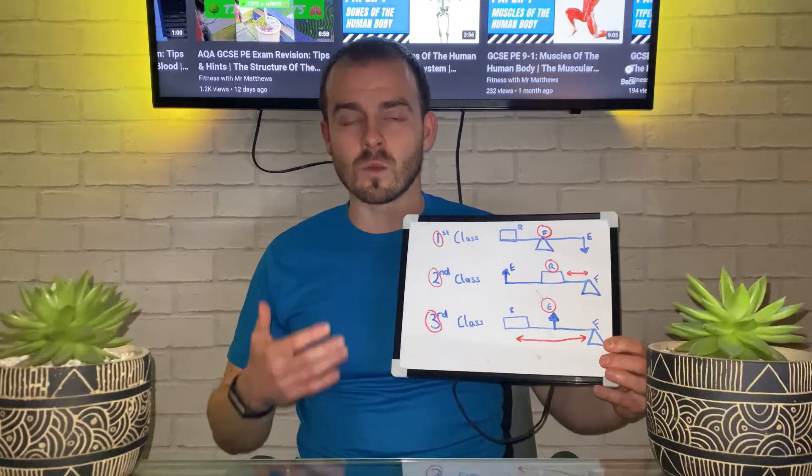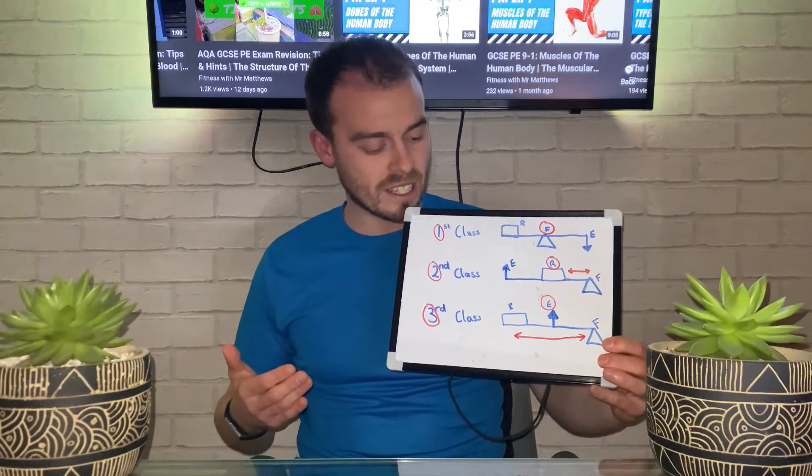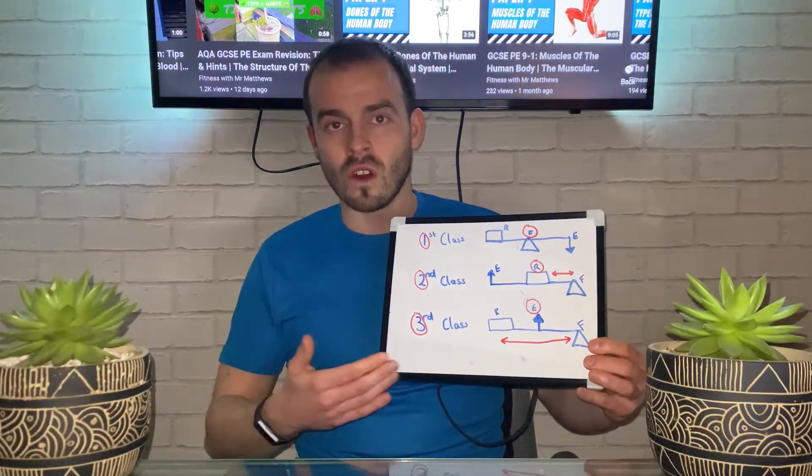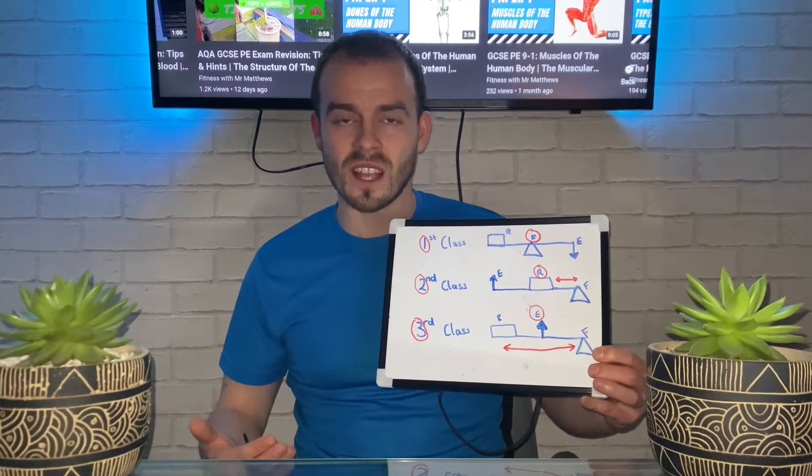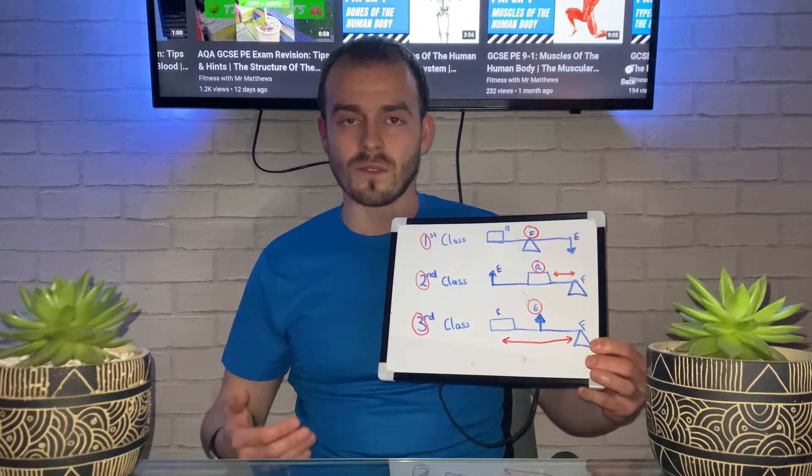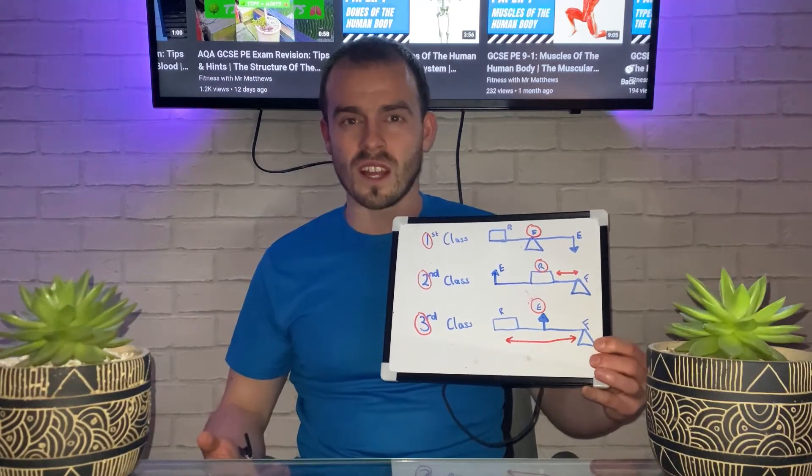What you also need to know is when you're asked to draw a lever system, you draw an arrow to represent the effort, a square to represent the resistance, and a triangle to represent the fulcrum.